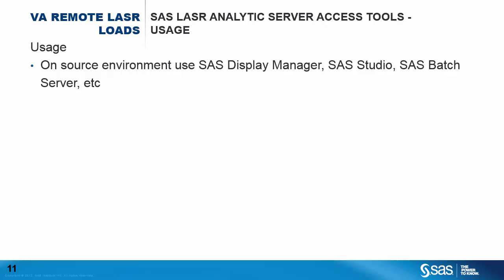Next, let's make sure that the LASR server is running on the target system. We look at the status, and it is running. Next, we will look at the LASR tables to see if the baseball table is loaded, and the status shows that it is unloaded. Now if we go back to our source system, bring up the code to load the table to the remote system and submit it — it completes without errors, and upon looking at the log, we see an indication that the LASR table was loaded. If we return to our target system and refresh the status of the table, we now see that the baseball table is loaded. We have verified that the SAS LASR Analytics Server Access Tools have successfully loaded the table to a remote LASR server.